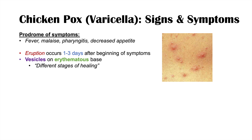A key feature of chickenpox is that these vesicles are all in different stages of healing. There are successive eruptions of groups of vesicles, and over time some begin to heal while others continue to erupt. Seeing different stages of healing is very key to the diagnosis of chickenpox. Because successive groups erupt at different times, they heal at different times, and this distinguishes chickenpox from other types of skin lesions.